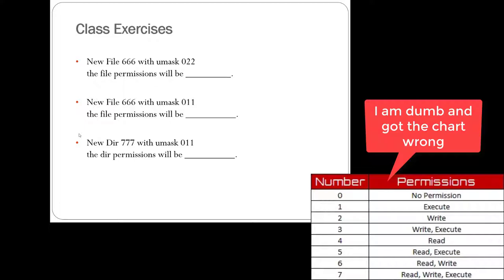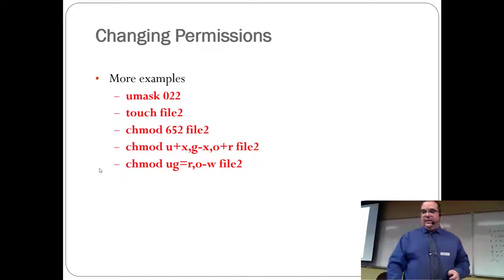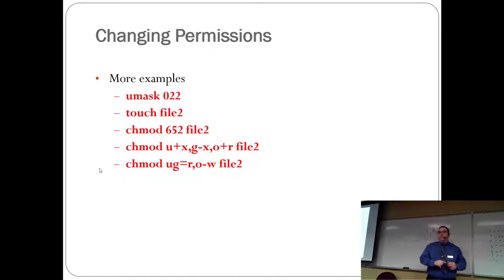A directory with 777 permissions and a default umask of 011 would give an effective permission of 766, meaning you could read, write, execute. On the group and others side, it would be 66 on the directory, which means no execute permission — you can read and write but you can't go into the directory. With umask 022, you get read, write, read, and read.